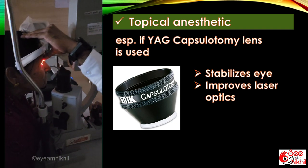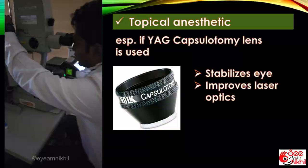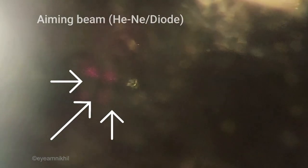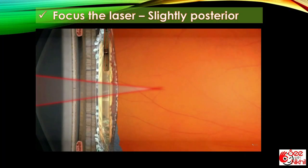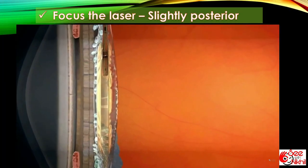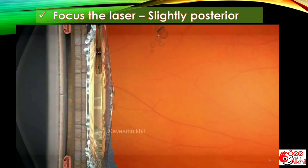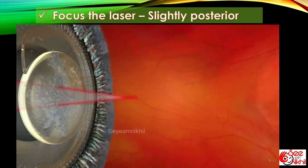Most of the surgeons perform YAG capsulotomy regularly without lens. Laser is now focused using an aiming beam which has four dots which appears as a single dot when focused. The point of focus is kept slightly posterior to the posterior capsule.